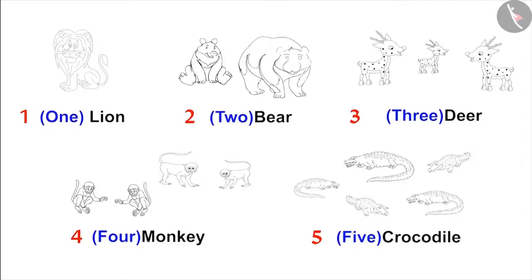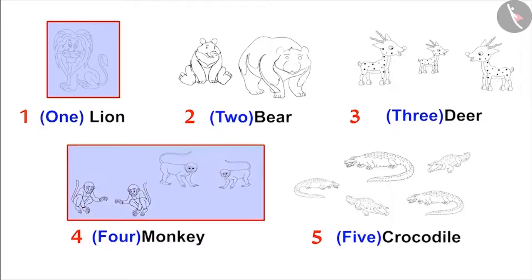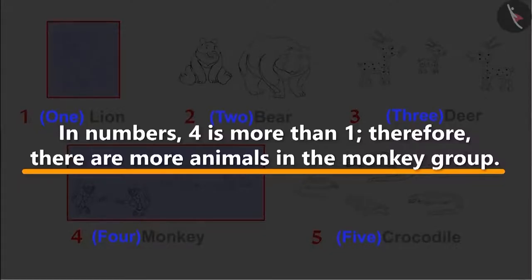Mom asks: are there more animals in the lion group or in the monkey group? Pinky answers that there is one animal in the lion group and four animals in the monkey group. Since four is more than one, there are more animals in the monkey group.